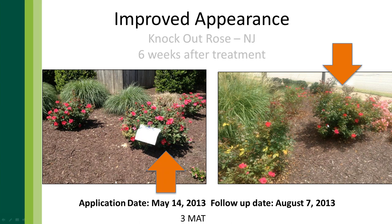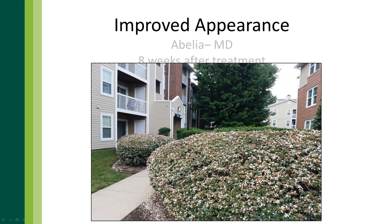Here is abelia eight weeks after treatment — you can see the amount of flowers on these plants. There are two reasons: first, the plant might actually produce more flowers because it's not putting as much energy into above-ground top growth, so it reinvests that energy into flower production. Second, if you think about abelia, all those flowers are produced on new growth. If you come through every few weeks pruning to maintain size and shape, you're pruning off all of those flowers. By not pruning as often, you get a better flower display.